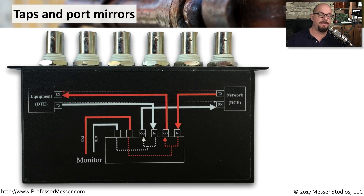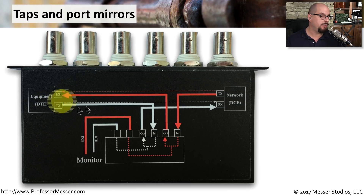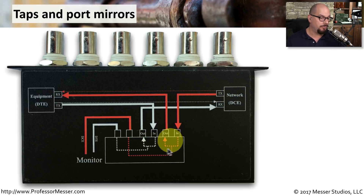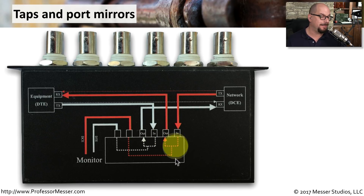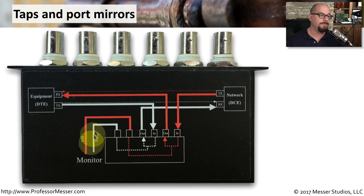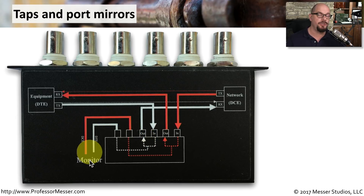Here's a closer look at a physical tap — this is one where you would break the connection and put the tap in the middle. Normally, the red connections would be connected to each other and the white connections would be connected to each other. Instead, we're putting the tap in the middle, so the red connection goes into the tap and comes right back out again. An extra copy is made inside the tap and sent to an outgoing port on the other side. The same thing happens on the white connection. Now you have these extra monitoring ports that you can plug into your analysis tool to capture all of the data between those two devices.